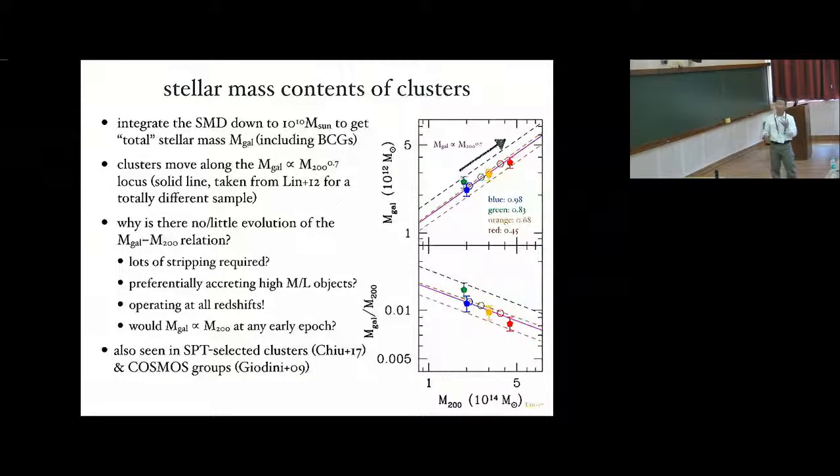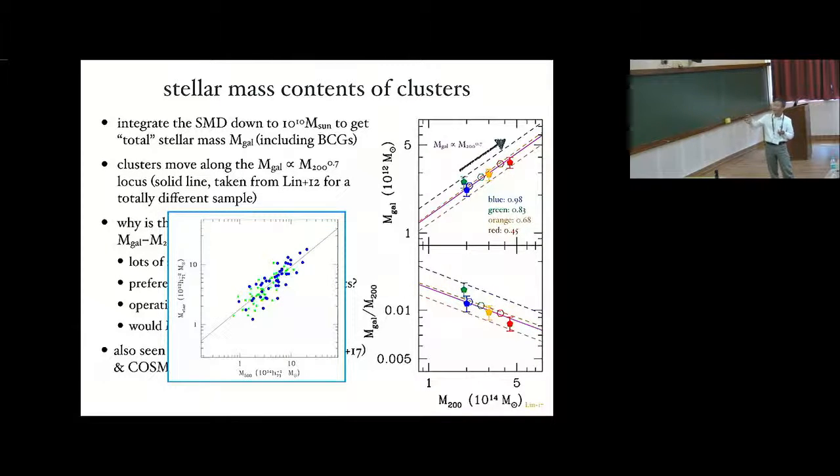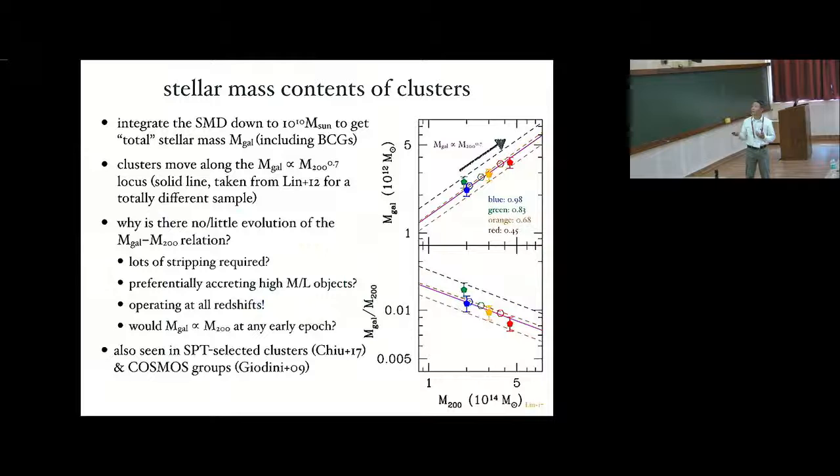And they are very well described by this pink solid line, which is described by a stellar mass going as cluster mass to 0.7 power. I should say that this is not a fit to the data points, but rather taken from this earlier study of mine, using a completely different cluster sample, at redshift between 0 and 0.6. So the best fit of this sample describes the current cluster sample very well. So combined together, basically, we have shown that there is no redshift evolution in this stellar mass-cluster mass relation out to redshift 1.